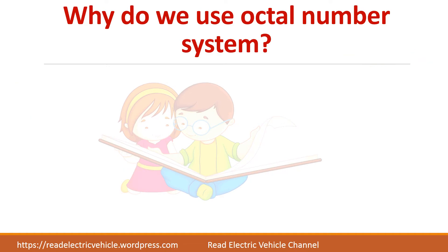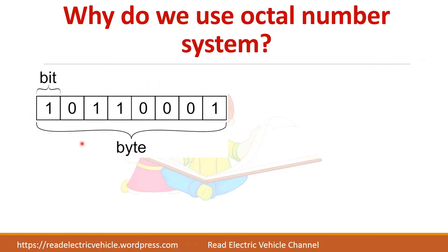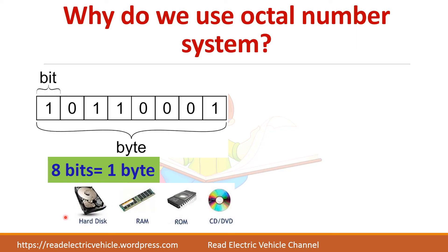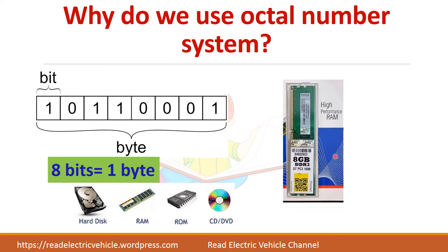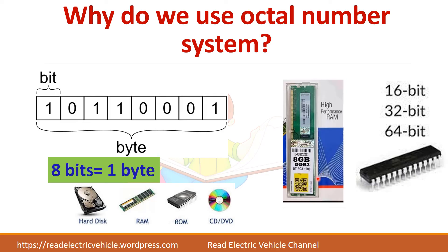In binary, 8 bits combined together is called a byte. In digital storage devices, storage is always mentioned in multiples of 8 — 16-bit processor, 32-bit processor, 64-bit — all these are multiples of 8. That is why we learn about the octal and hexadecimal number systems.